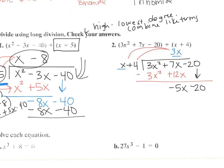Now you do what times x is negative 5x? That's negative 5. So then you multiply again. So this is going to be negative 5x minus 20. This cancelled out. So there's no remainder. So this is our answer.